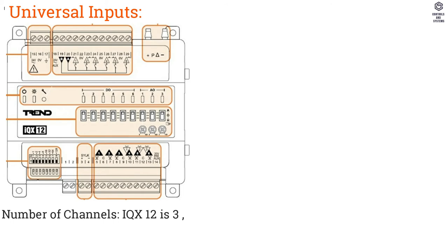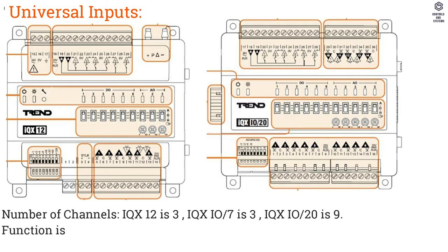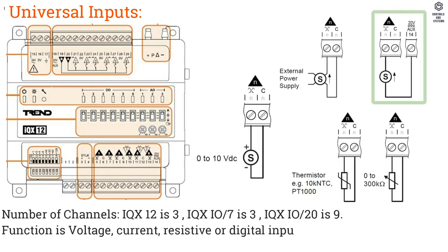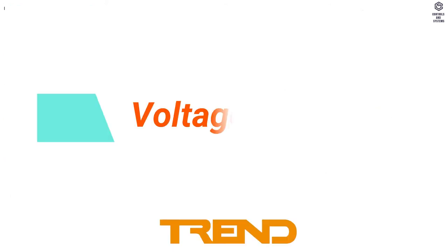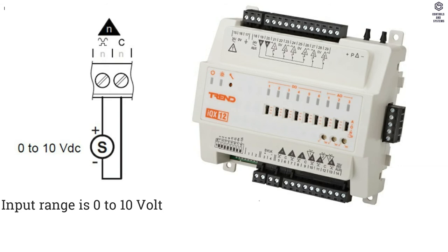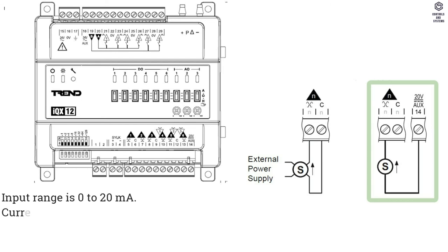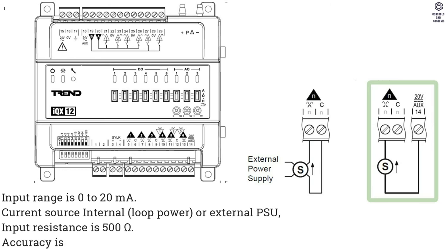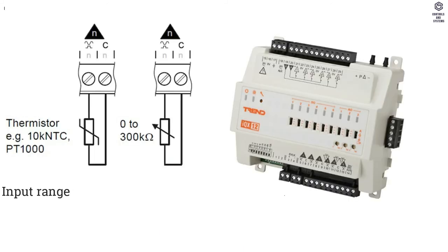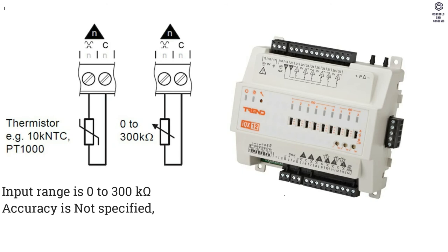Inputs and Outputs — Universal Inputs: Number of channels: IQX12 is 3, IQXIO7 is 3, IQXIO20 is 9. Function is voltage, current, resistive, or digital input. Resolution is 16-bit. Voltage input range is 0–10V DC, input resistance is 189 kΩ, accuracy less than 0.5% of full scale. Current input range is 0–20 mA, current source is internal loop power or external PSU, input resistance is 500 Ω, accuracy less than ±0.5% of full scale. Resistive input range is 0–300 kΩ, bridge resistor is 10 kΩ, bridge supply is 3.3V.